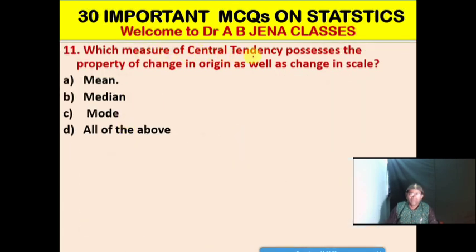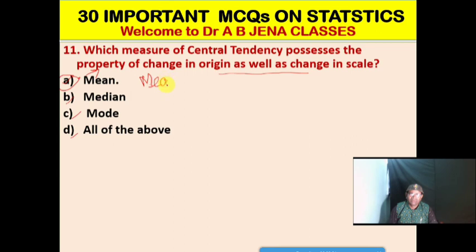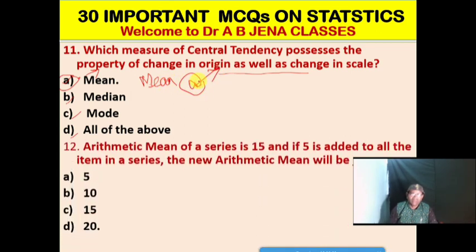Next MCQ: Which measure of central tendency possesses the property of change in origin as well as change in scale? A. Mean. B. Median. C. Mode. D. All the above. A is the right option. Mean, as a measure of central tendency, possesses the property of change in origin as well as change in scale.